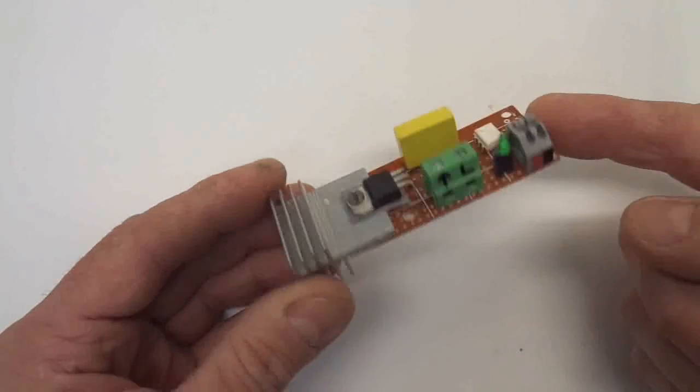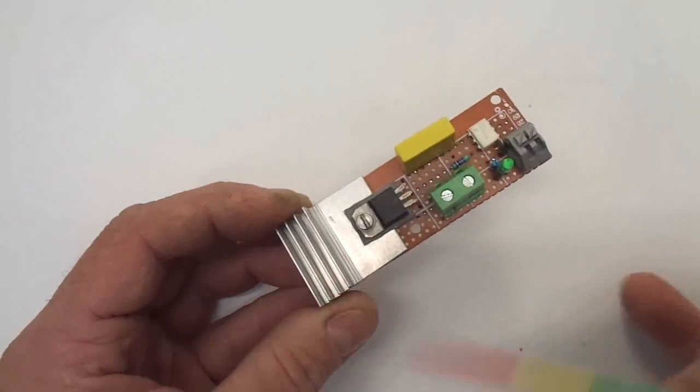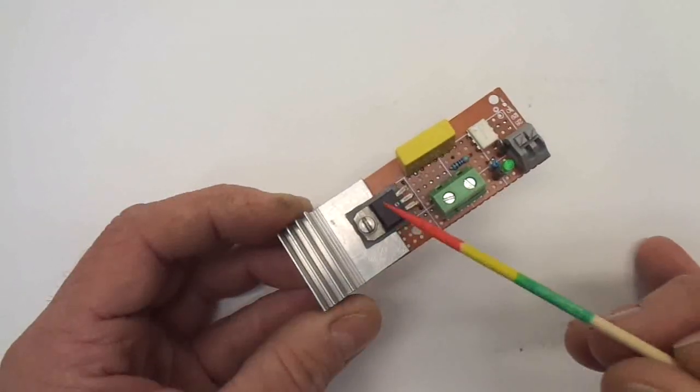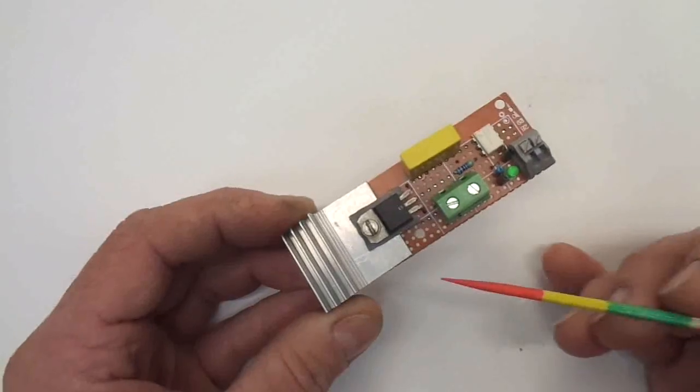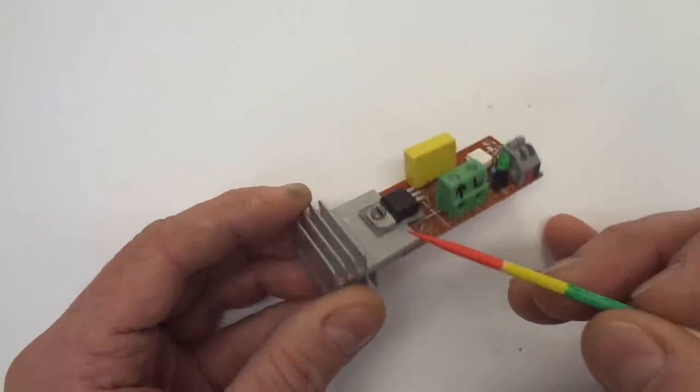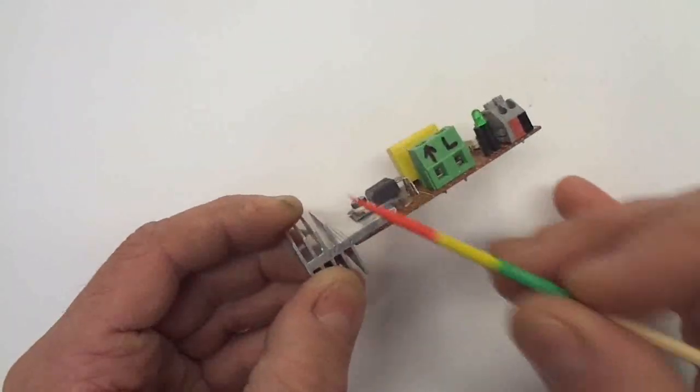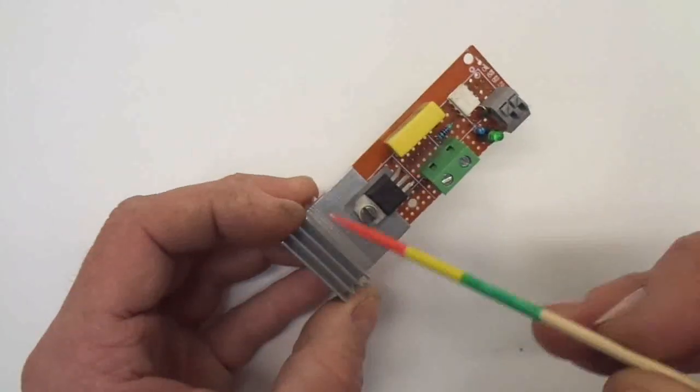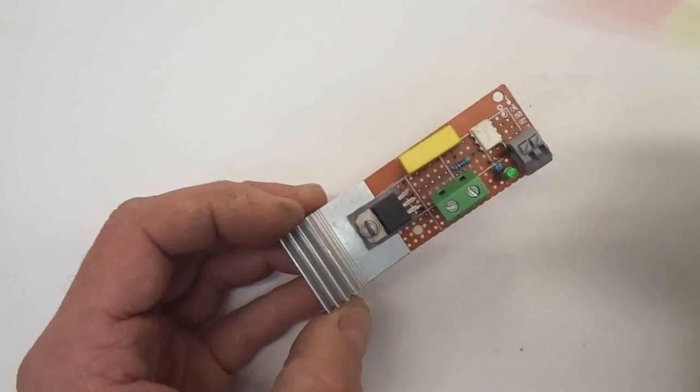So let me quickly go through the components and explain what happened here. Here is my triac, 25 amp triac. Electrically isolated is the heatsink - that's important, otherwise the heatsink could become live. It's dangerous.